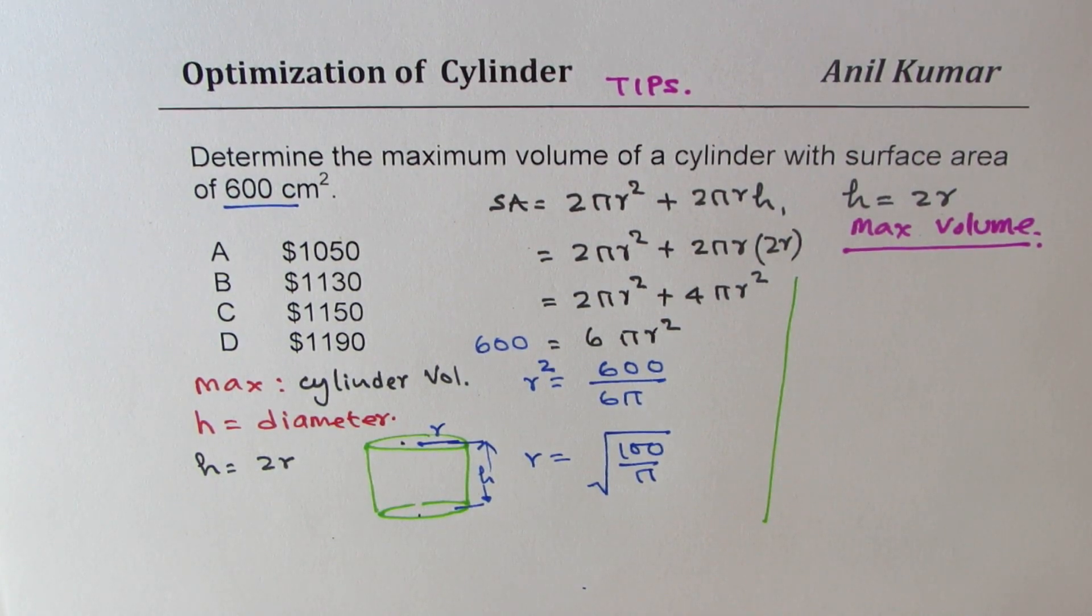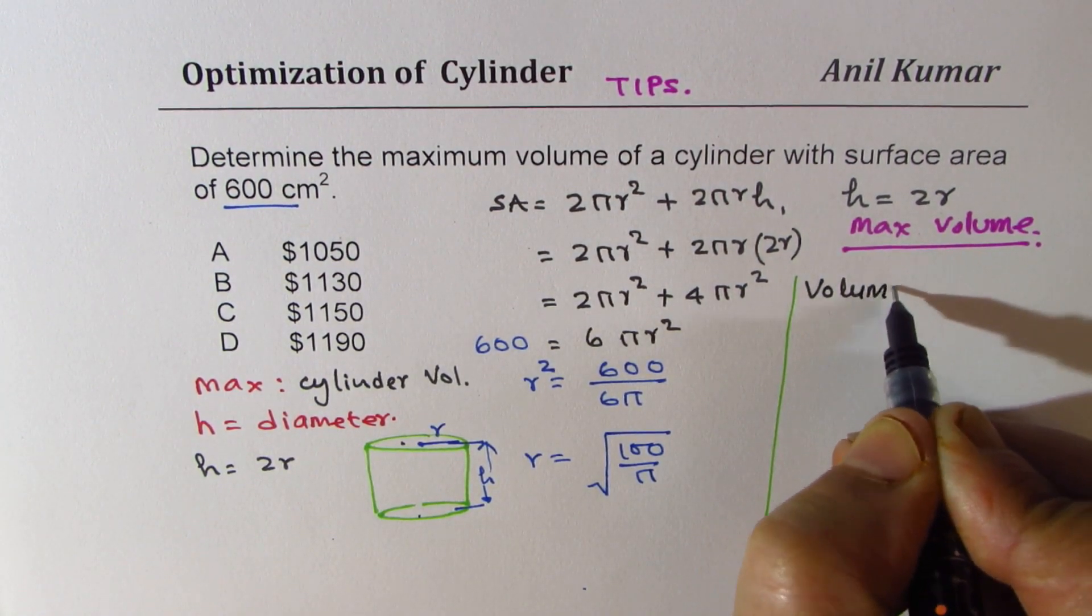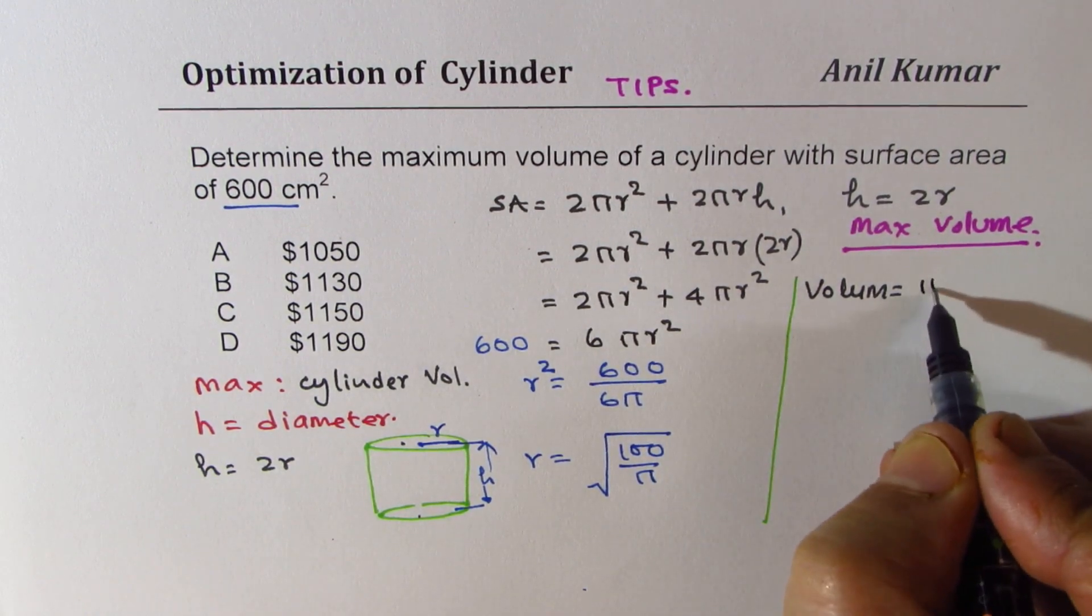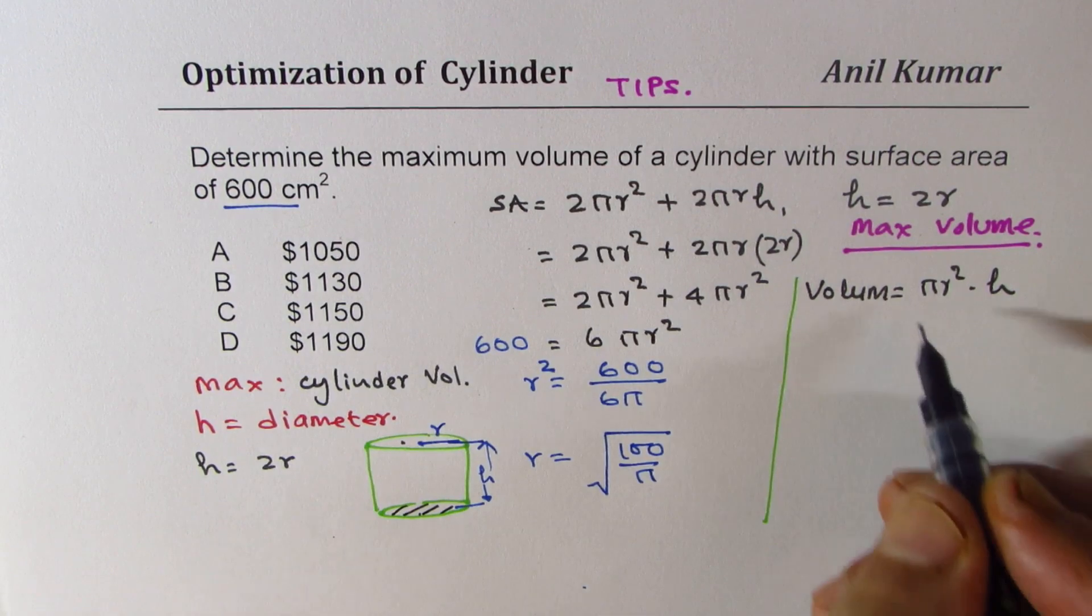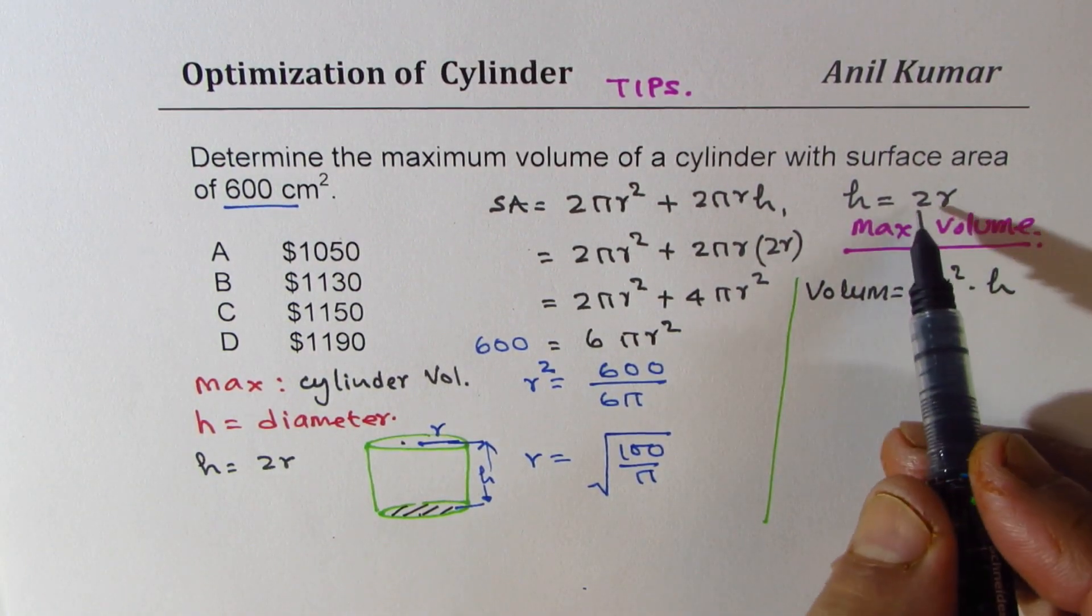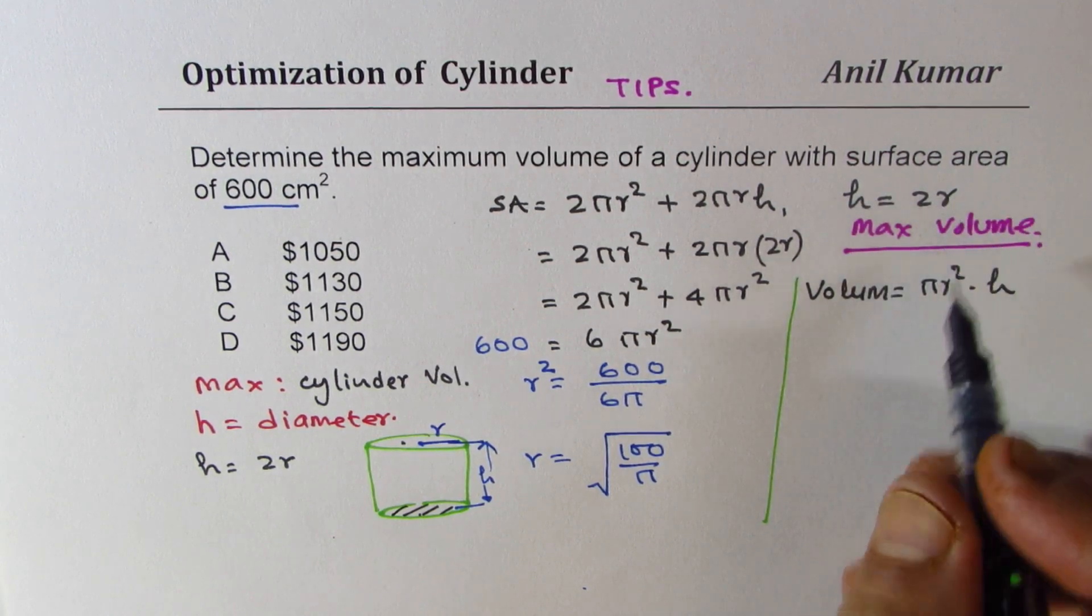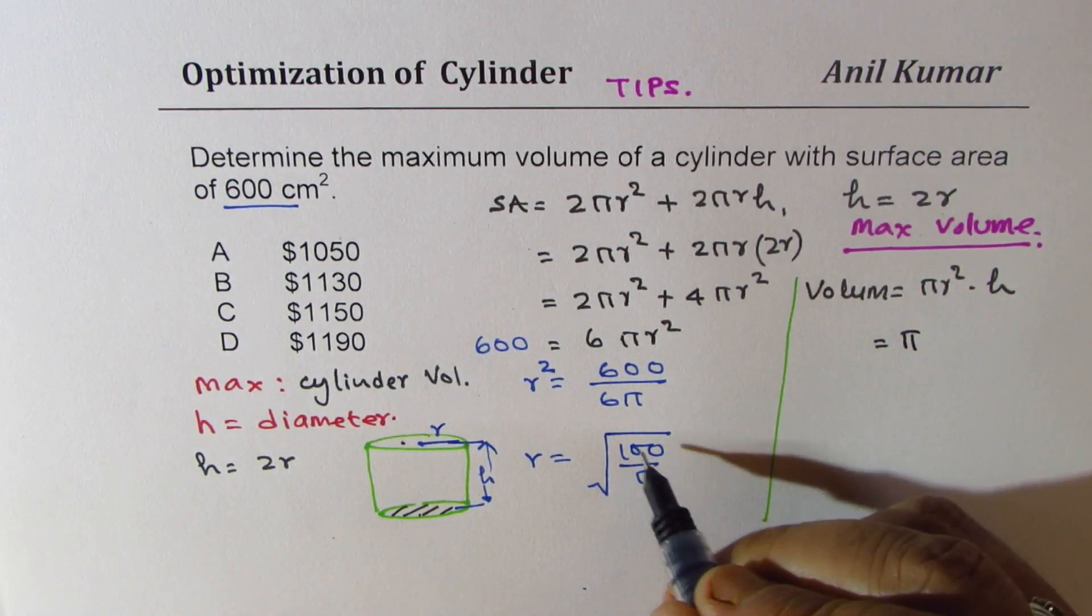Once you know the radius, you can always find the volume. So now the volume is pi r square times height. Area of the base, which is pi r square times height. So we will again use 2 times r. Height is 2 times r.